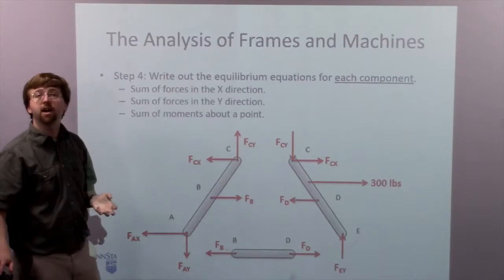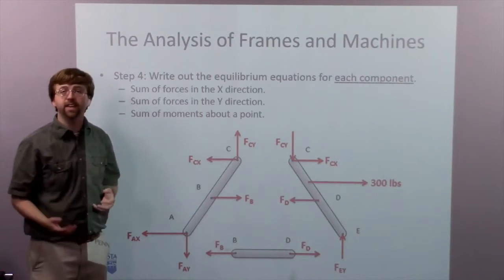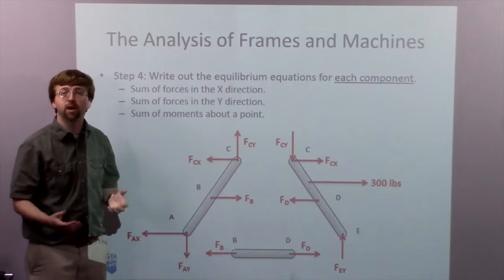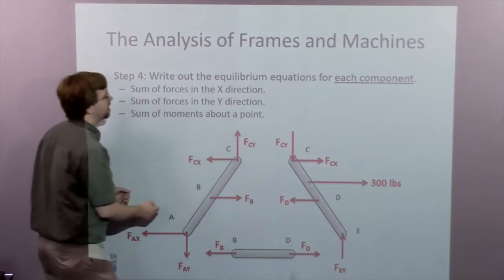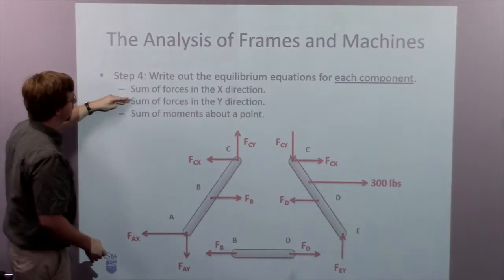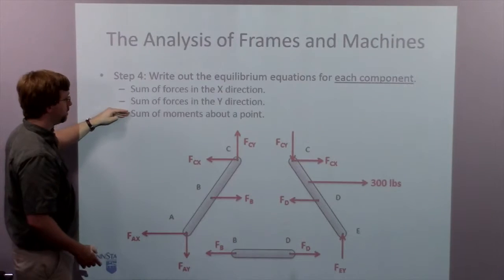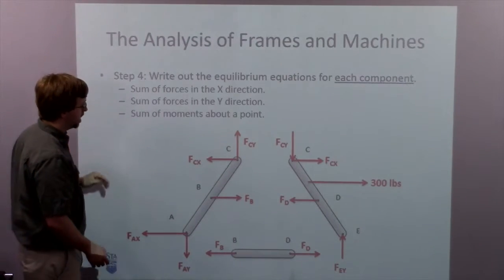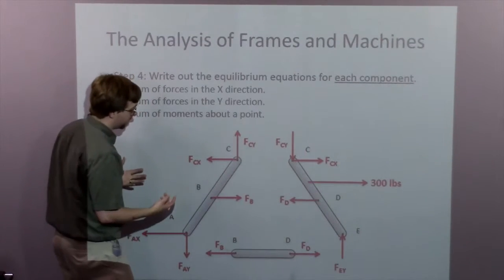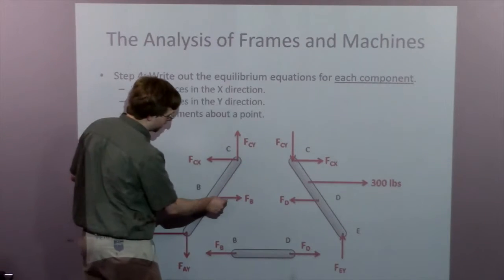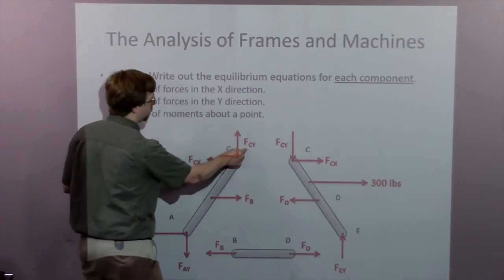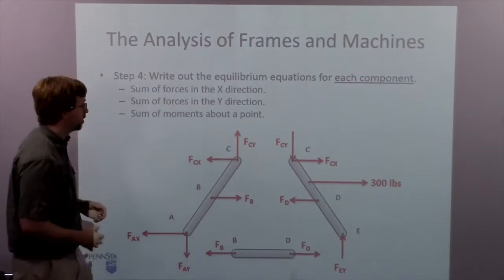So once I have my free-body diagram, I'm going to write out the equilibrium equations for each component. So member ABC, I've got potential to do sum of forces in the X, sum of forces in the Y, and the sum of moments about some point. That will let me solve for up to three unknowns. So if I know these two already from the external reaction forces, I can solve for one, two, three unknowns.